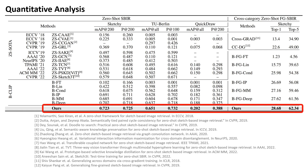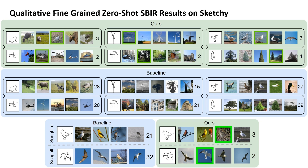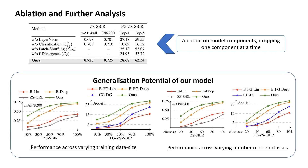Our method outperforms all others in comparison. We also show qualitative zero-shot categorical SBIR results and qualitative fine-grained zero-shot SBIR results on Sketchy. We ablate our model's components one by one; the results show that every single loss component contributes significantly towards accuracy. The generalization section shows that our model holds stable performance when training data size is limited as well as when the number of training categories is lower.